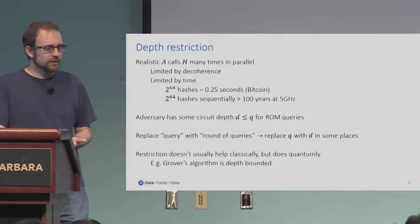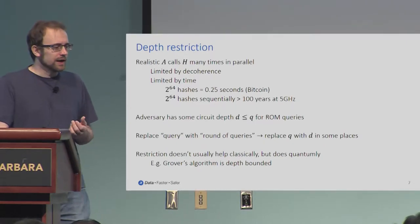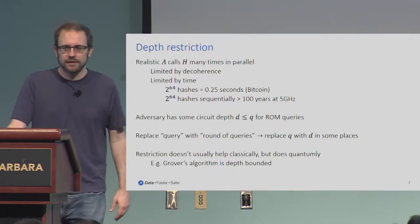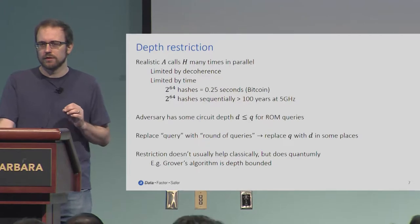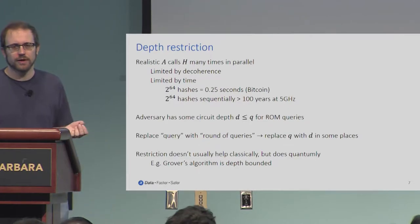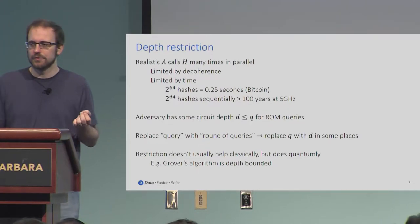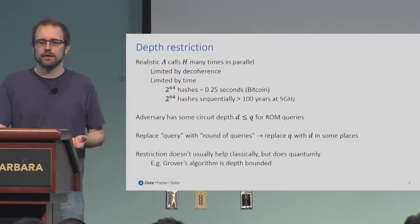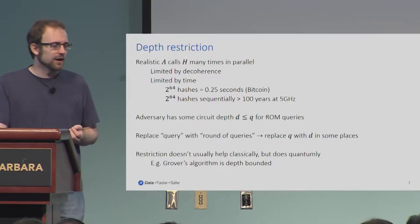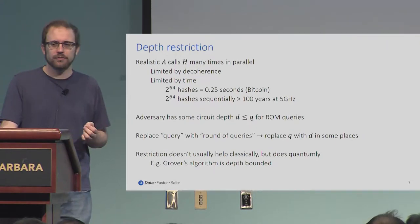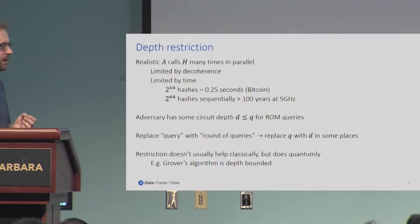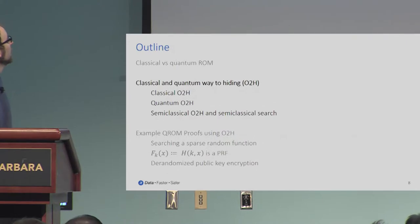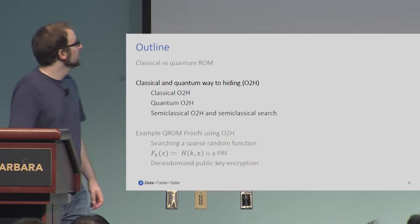So in addition to the number of queries, we're going to use a depth of queries — a circuit depth where the things that add to the depth are oracle queries. This isn't necessarily less than or equal to Q. All this really does is in the analysis it replaces query with round of queries. In the classical random oracle model it doesn't necessarily help — you still end up with Q out front instead of D out front in most cases. But in the Q-ROM, it will help. For example, Grover's algorithm is going to depend on the depth of the quantum queries and not just the number of them.